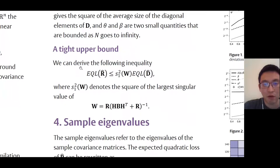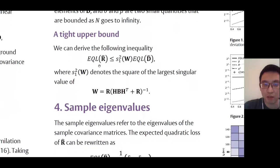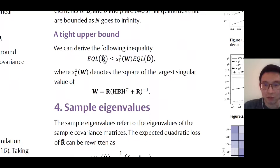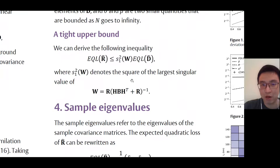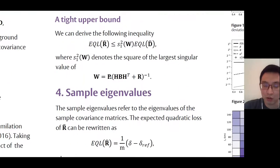In our work, we derive an inequality for the expected quadratic loss of the sample observation error covariance matrix R hat. The sampling error of R hat depends on the expected quadratic loss of D hat and a term denoting the square of the largest singular value of W, where W is the product of R and the inverse of the sum of BH transpose plus R.